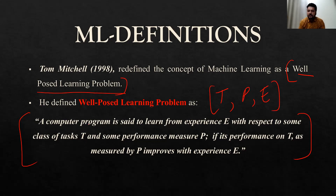A computer program is said to learn from experience E with respect to some task T and some performance measure P, if its performance on T as measured by P improves with experience E. In short, the performance on task T will improve with experience E. This is the basic definition you need to understand.